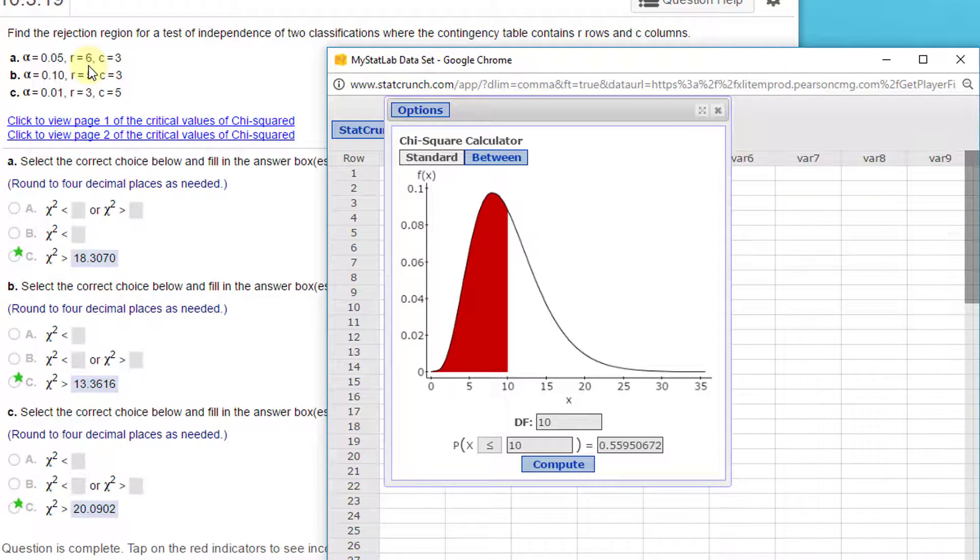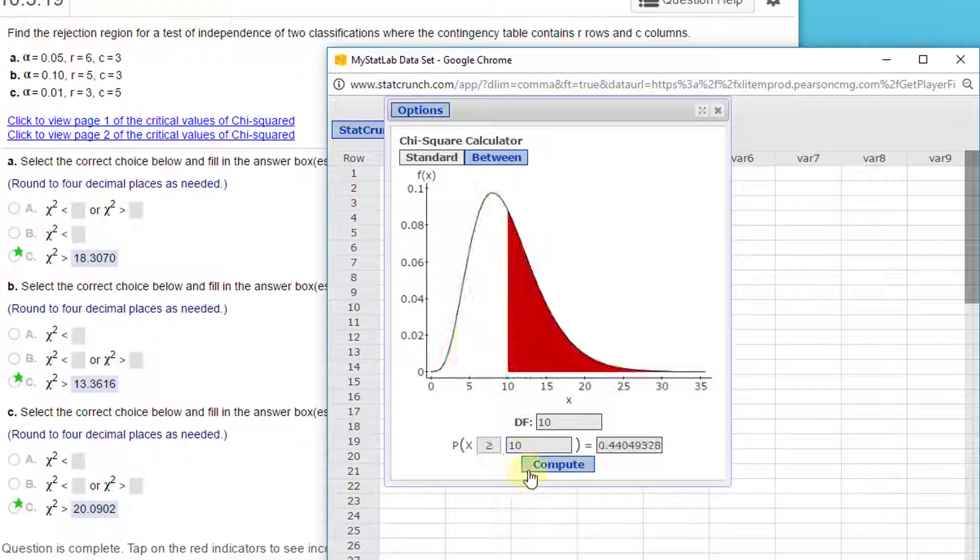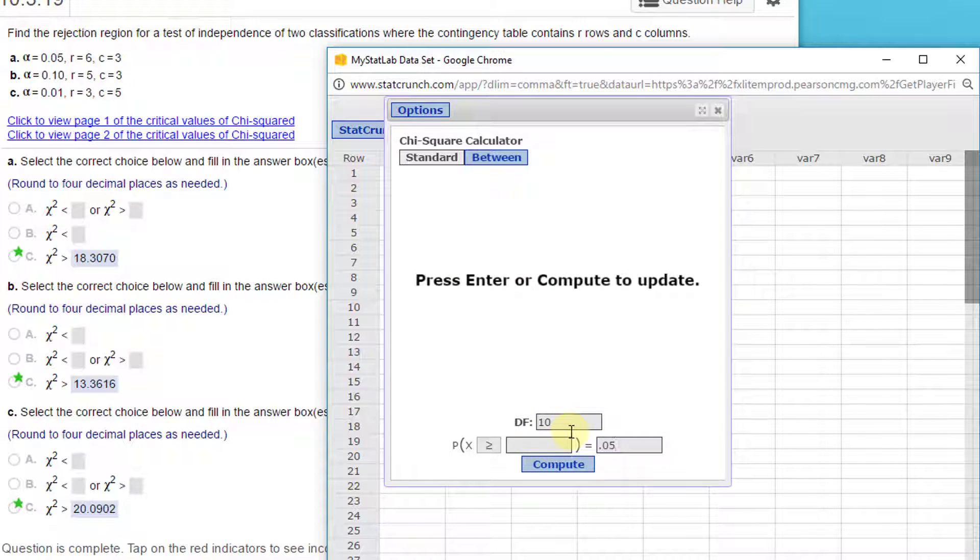So in this first one, we've got 6 minus 1 is 5, and 3 minus 1 is 2. 5 times 2 is 10. So I'll put 10 in there. I'm going to go to the right tail, and an alpha of 0.05. Click on Compute, and I get a critical value of Chi-Square of 18.3070.